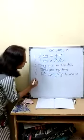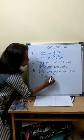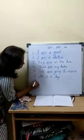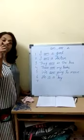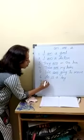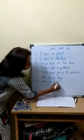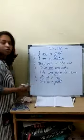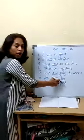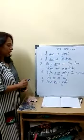Now we will see the examples for is. He is a boy — we are pointing to a particular boy, that time we use he is a boy. When we are talking about a girl, we use she is a girl. When we are talking about a particular person, that time we use is.